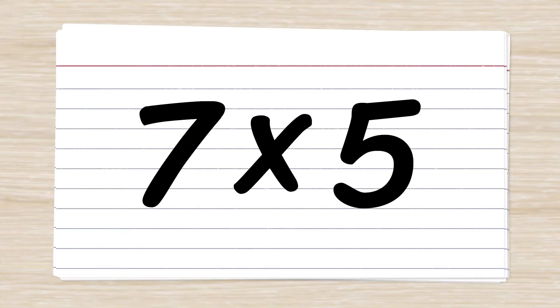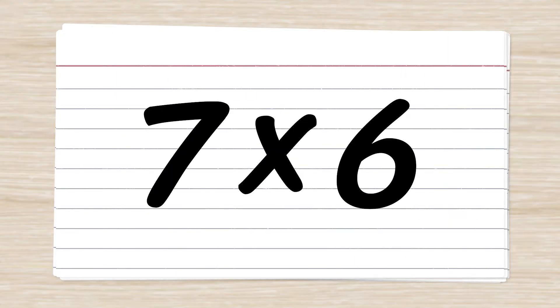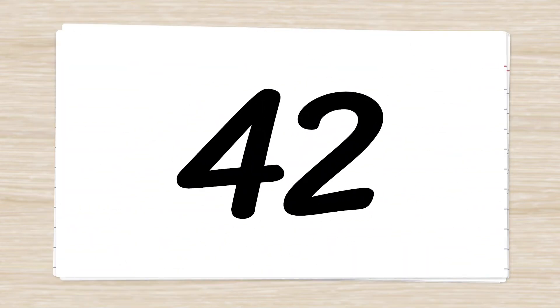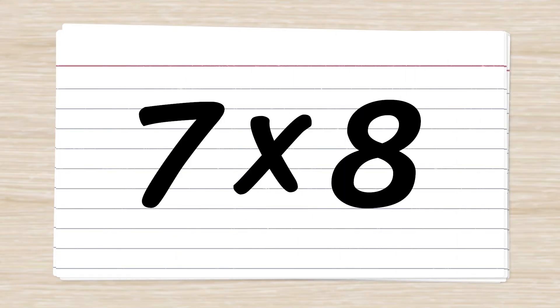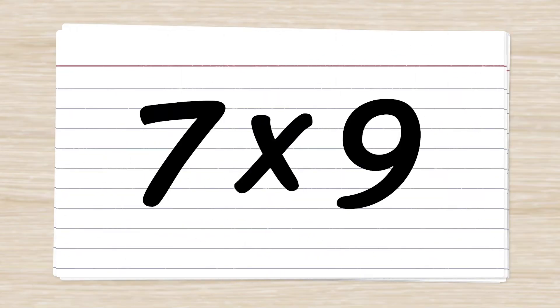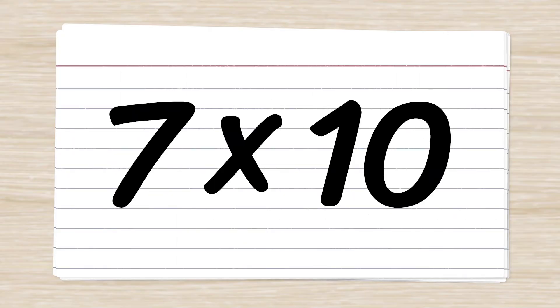Seven times five. Thirty-five. Seven times six. Forty-two. Seven times seven. Forty-nine. Seven times eight. Fifty-six. Seven times nine. Sixty-three. Seven times ten. Seventy.